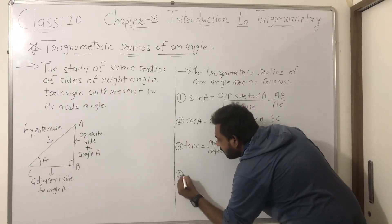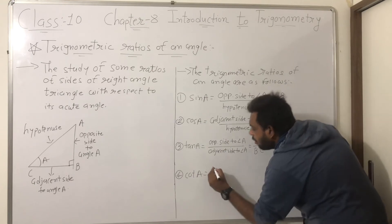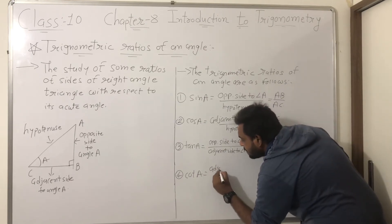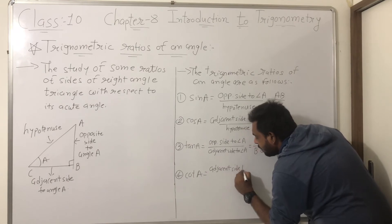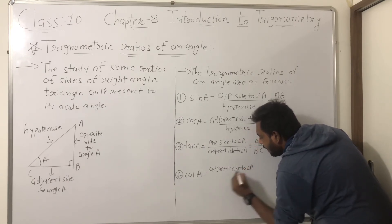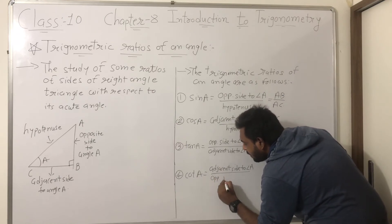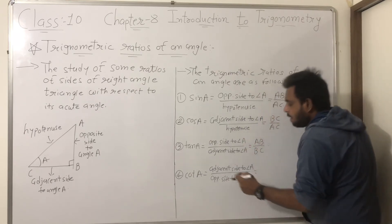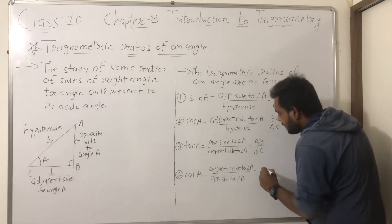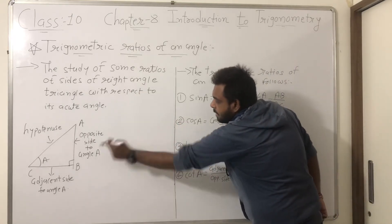The fourth one is cot A. Cot A means adjacent side to angle A divided by opposite side to angle A. The adjacent side is BC and the opposite side to angle A is AB. So cot A equals BC by AB.